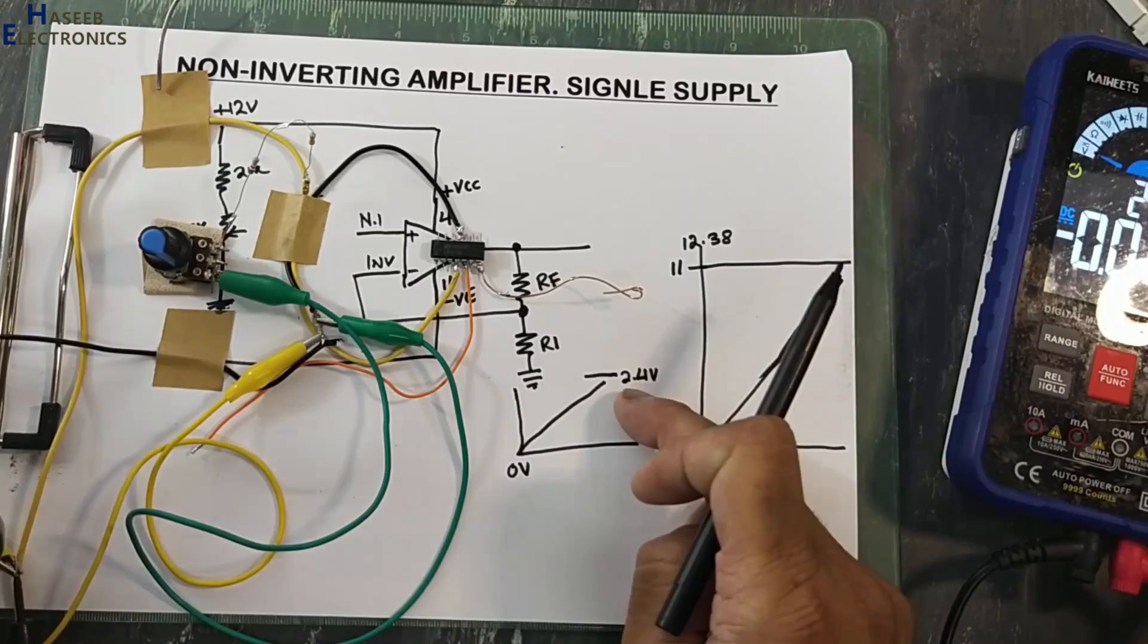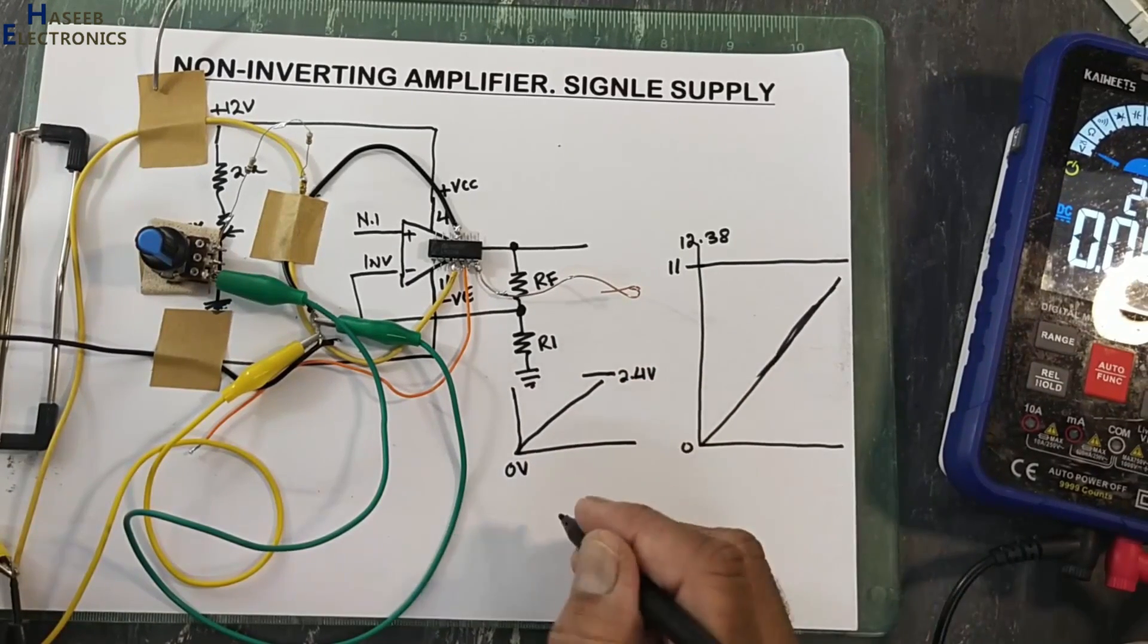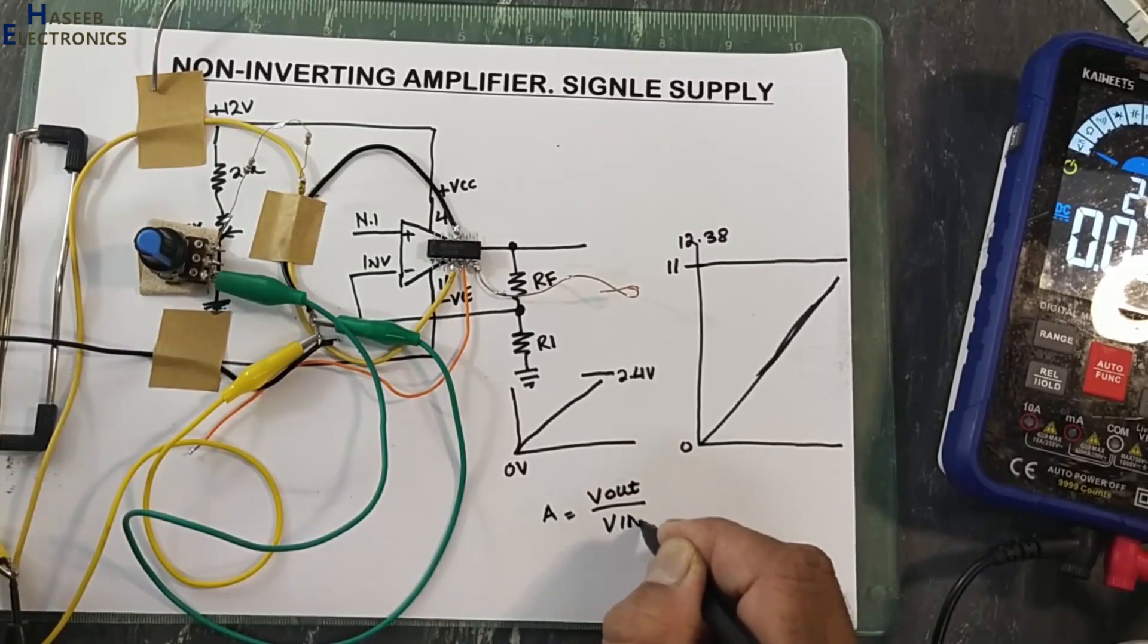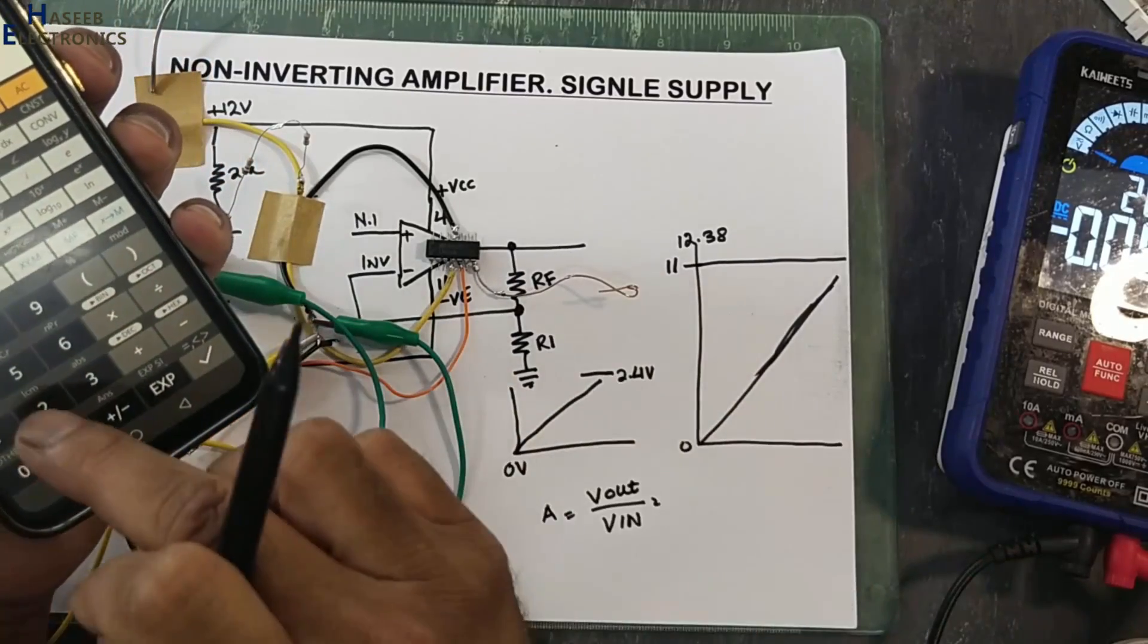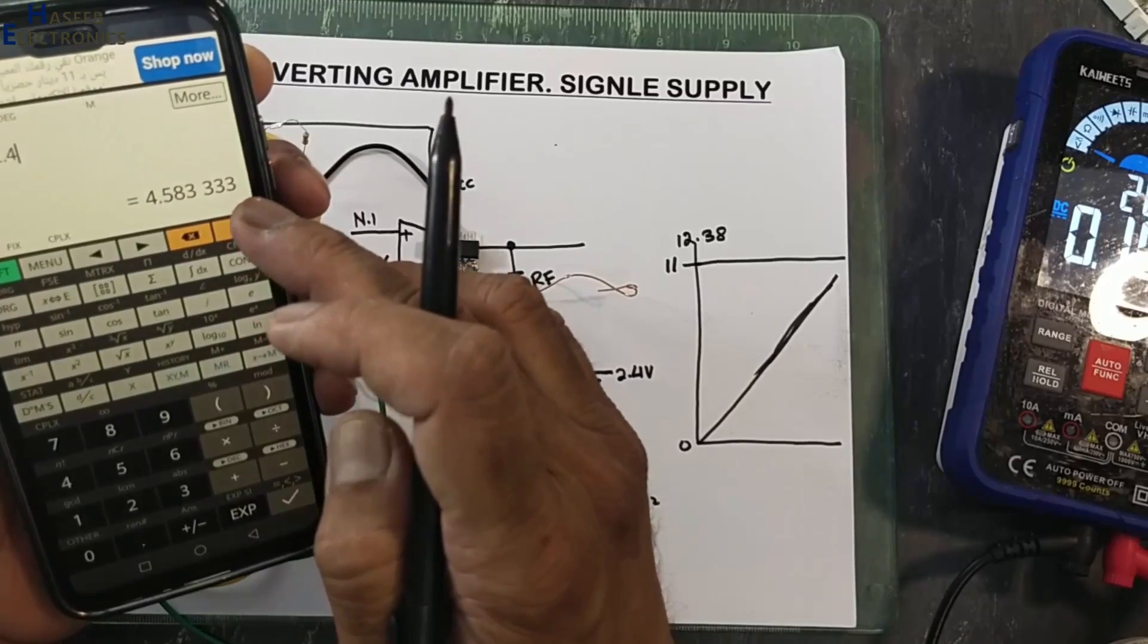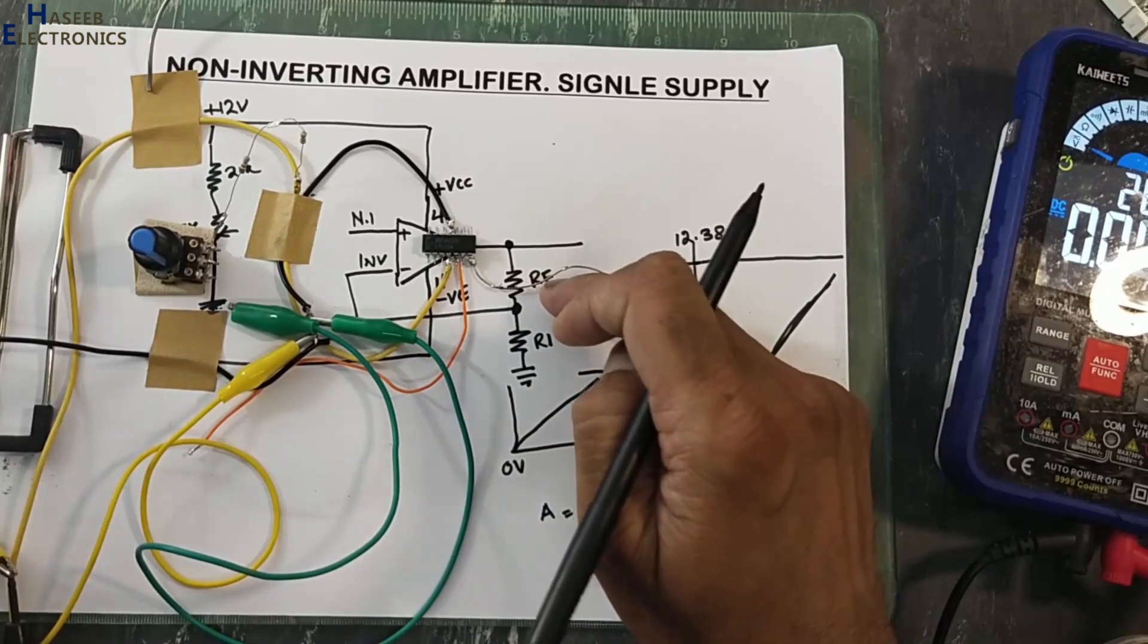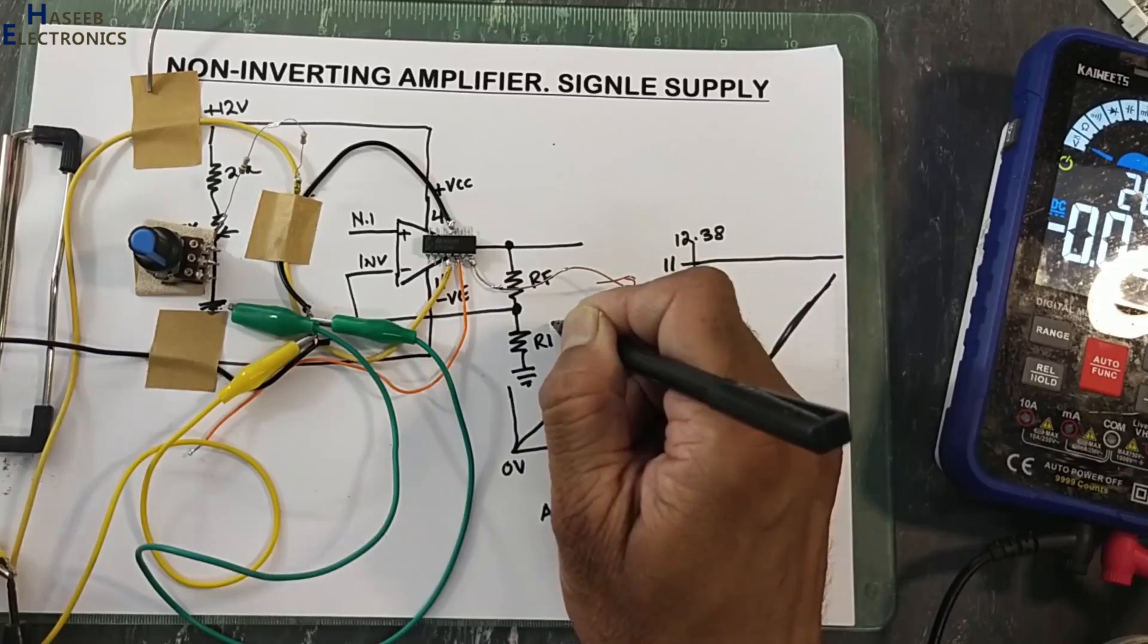Its required gain: V out divided by V in, 11 divided by 2.4. We need gain of 4.58. This is required gain. To set gain, we need this feedback resistor. We will assume R1 10k. Gain A, that is 4.58, equals 1 plus Rf divided by R1.